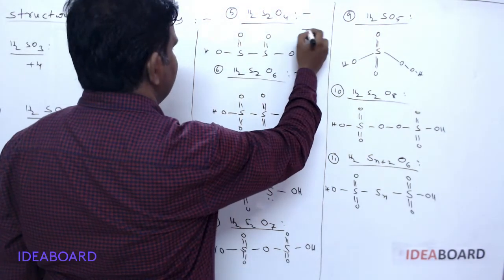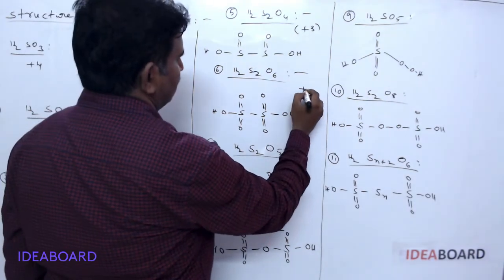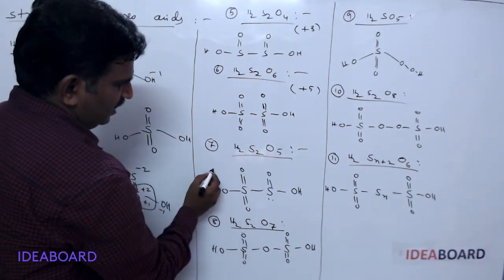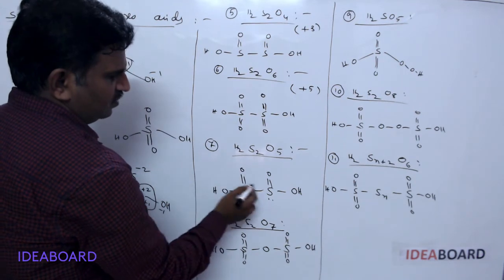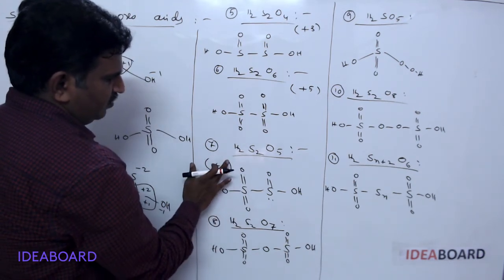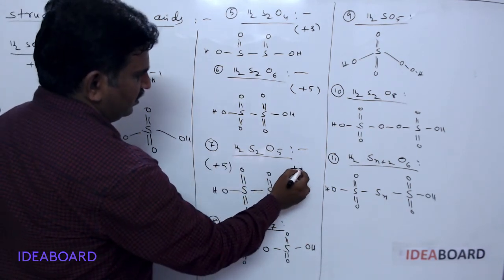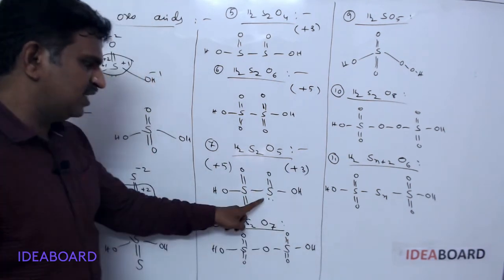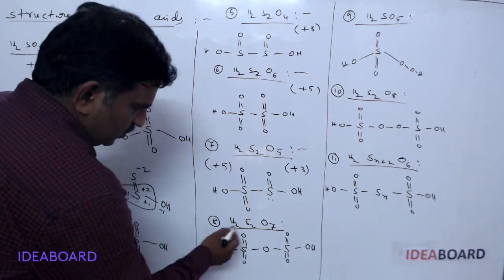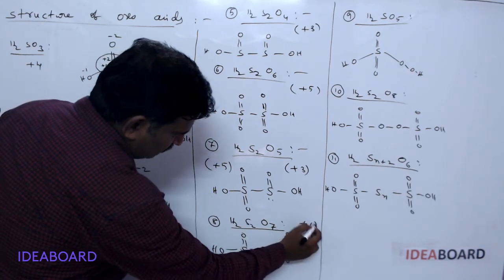In dithionous acid, each sulfur has a +3 oxidation state. In dithionic acid, each sulfur has a +5 oxidation state. In pyrosulfurous acid, the two sulfurs have different oxidation states — one is +5 and one is +3 because it has one oxygen atom less. In H₂S₂O₇, both sulfurs have a +6 oxidation state.